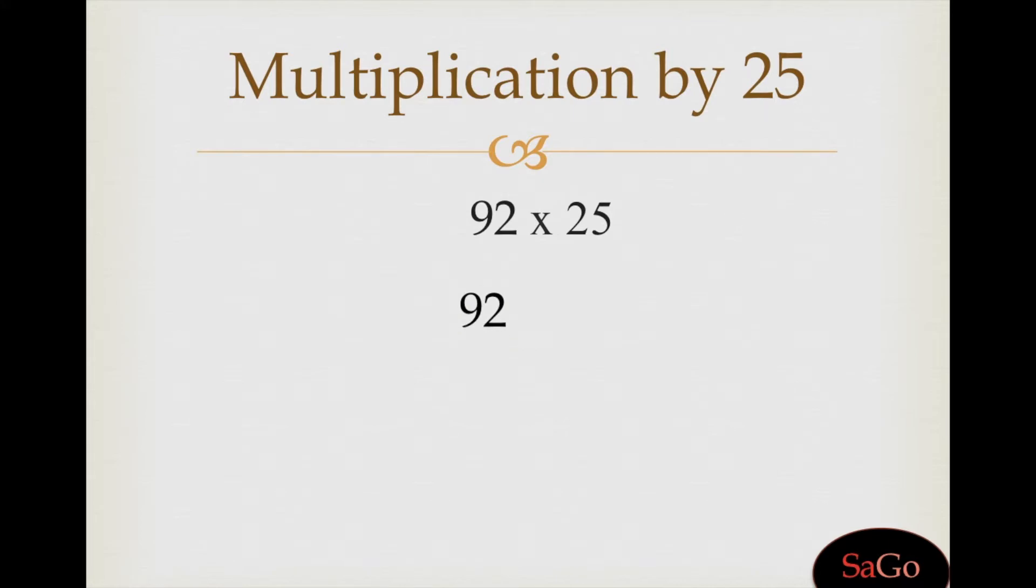Let's take one more sum. 92 x 25. Write 92. Make one-fourth of 92. We will get 23. Multiply 23 with 100. Answer is 2300.